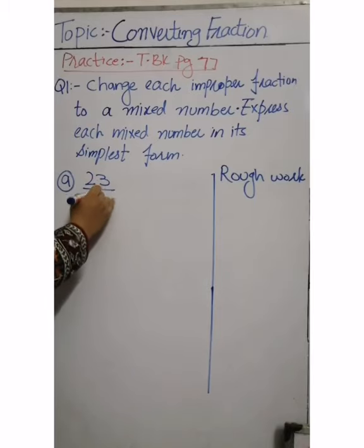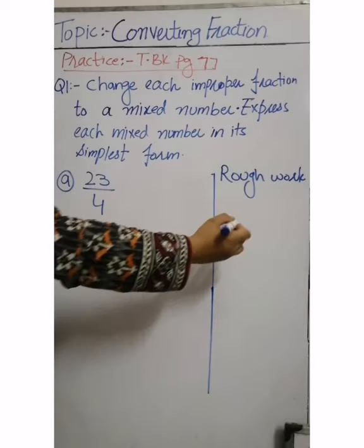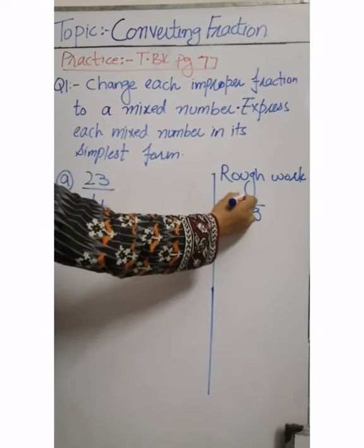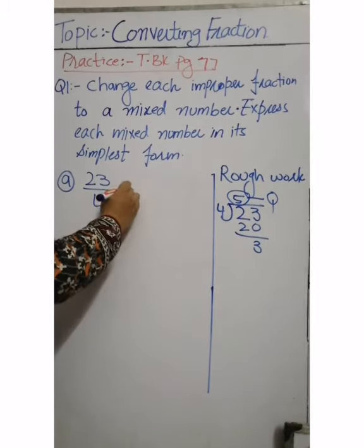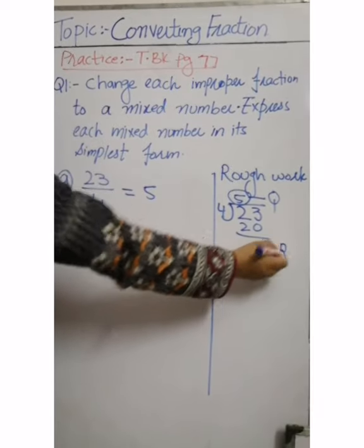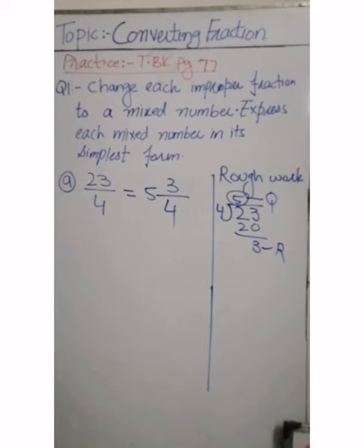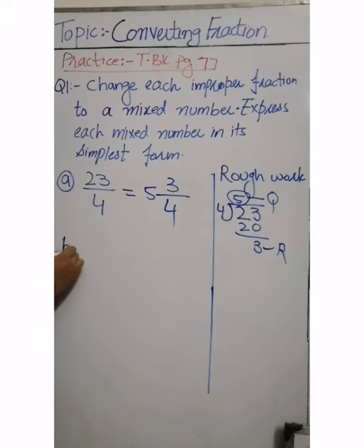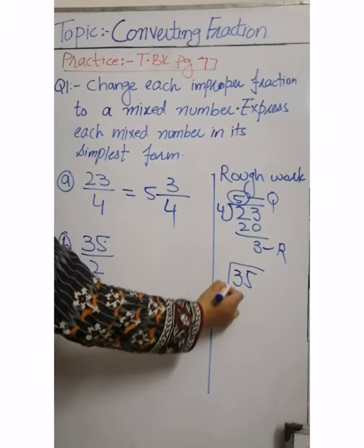Our first question is 23 by 4. We will change this improper fraction to a mixed number. We put 23 inside and divide it by 4. 4 goes 5 times, giving 20, and we get a remainder of 3. This quotient 5 becomes the whole number, this remainder 3 becomes the numerator, and the denominator remains the same. So the answer is 5 whole 3 by 4.